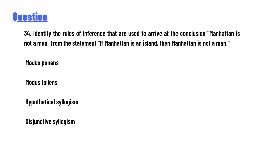Identify the rules of inference that are used to arrive at the conclusion: 'Manhattan is not a man,' from the statement: 'If Manhattan is an island, then Manhattan is not a man.' The options are: modus ponens, modus tollens, hypothetical syllogism, or disjunctive syllogism.